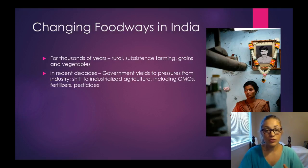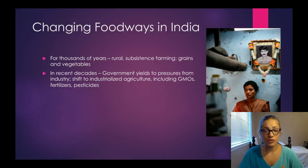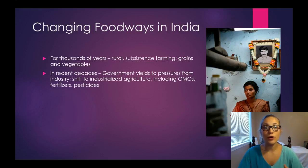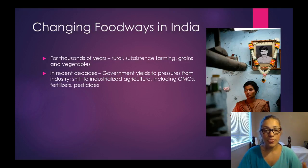This subsistence farming focused mostly on grains and vegetables — a relatively healthy human diet. But in recent decades, we start to see the Indian government yield to pressures from outside sources and from industry, and we're seeing a shift from subsistence farming to more of an industrialized agriculture.